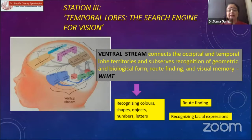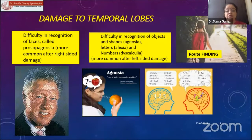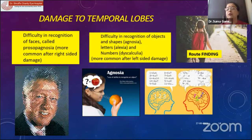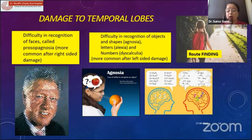When the temporal lobe is affected, it impacts recognizing colors, shapes, objects, numbers, letters, and facial expressions. It is so important — if a child cannot recognize a person by face, or cannot recognize objects, letters, or numbers, they may even lose their route, getting confused in a crowd when trying to go home or to any other place.